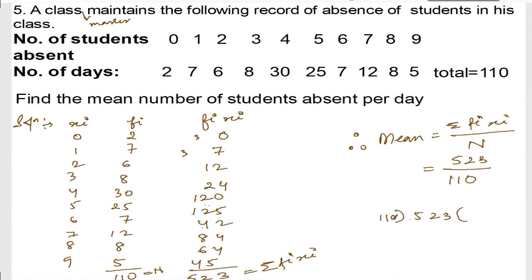If I divide 523 by 110: 110 times 4 is 440. 523 minus 440 is 83. Bringing down zero, I get 830. 110 times 7 is 770. 830 minus 770 is 60.